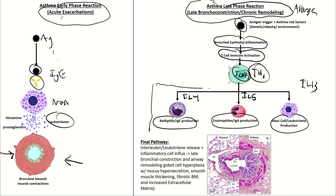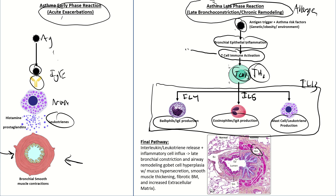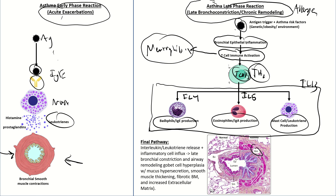Chronic Th2 inflammation drives chronic remodeling and airway narrowing. In what was called intrinsic neutrophilic asthma, T-cell activation produces a more neutrophilic response — a different inflammatory pathway but still T-cell mediated.